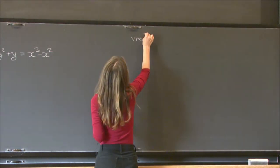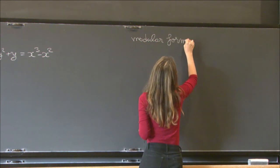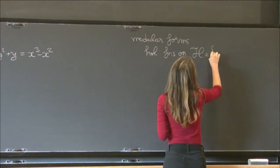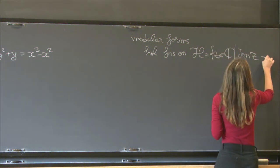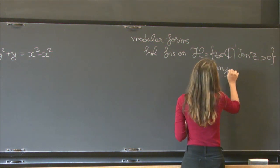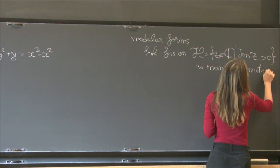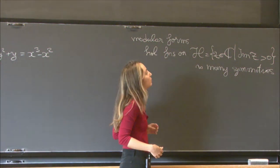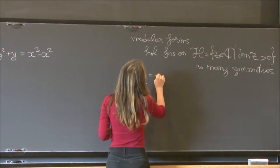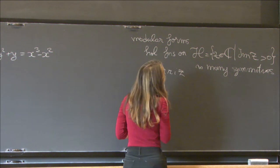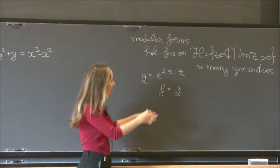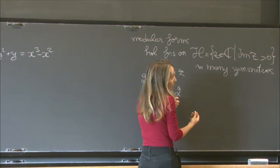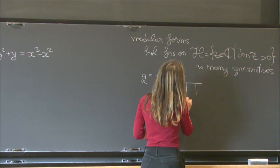Modular forms live in a different world — the world of harmonic analysis. They are holomorphic functions on the upper half complex plane that satisfy many symmetries. One of these symmetries allows us to write them down in terms of a Fourier expansion. If we take q to be e to the 2πiz, then a cusp form — a special kind of modular form that vanishes when the imaginary part of z goes to infinity — can be written as a power series in q.